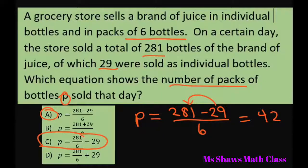It just takes the 281 as separate from the individual. But 29 were part of that 281. So you have to subtract it first before you divide by six.